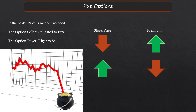Put options work the other way. If the strike price is met or exceeded to the downside — falls below — the option seller is obligated to buy the shares and the option buyer has the right to sell. I have used selling put options because either the price went up and I make money, or the price goes down and I get to buy the shares for cheap. The price goes up and I make money on the premium — so no matter what there was an opportunity, because I expected to benefit by getting the shares cheaper.